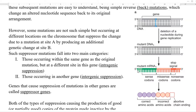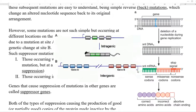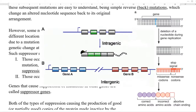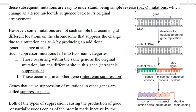Whereas when the second mutation that minimizes the effect of the first mutation takes place in another gene — a different gene — it is referred to as intergenic suppression. Genes that cause suppression of mutation in other genes are commonly referred to as suppressor genes.